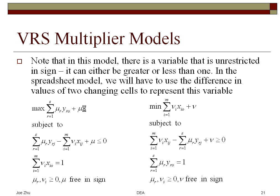What you usually do is set this variable equal to the difference of two new variables. For example, you set this mu equal to mu1 minus mu2, and the two new variables mu1 and mu2 are both non-negative.